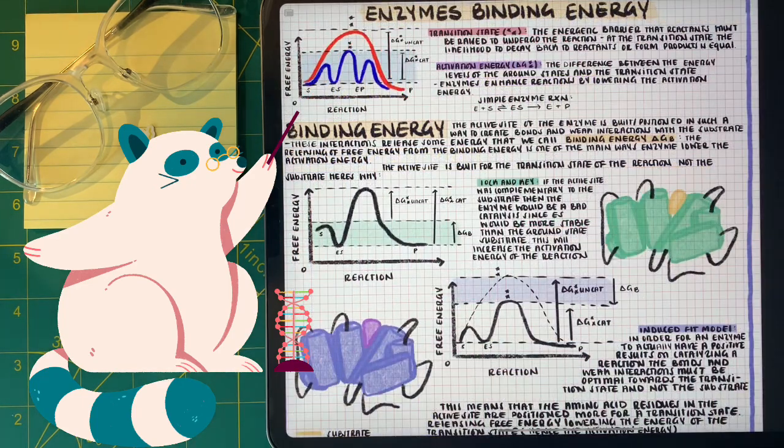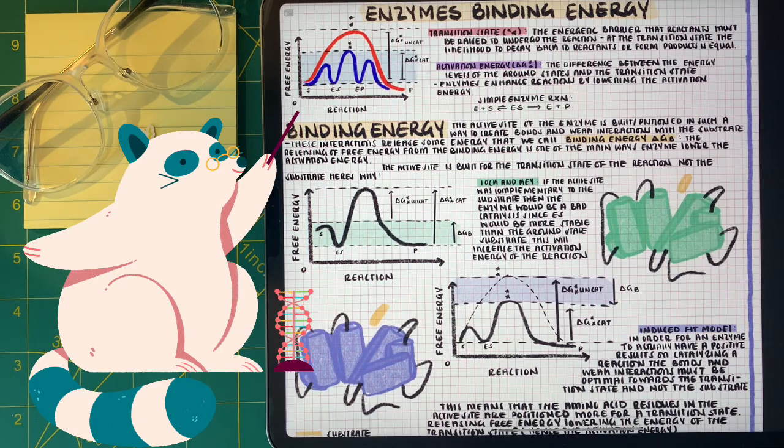So instead of active sites being perfect for the substrate, they're actually perfectly fitted for the transition state. This allows us to lower the activation, have beneficial binding energy, and allow the reaction to happen faster.